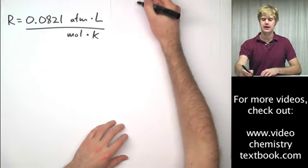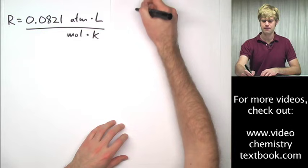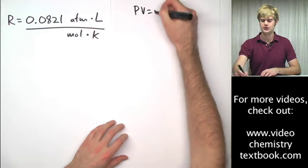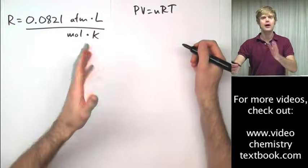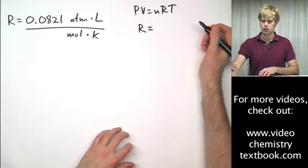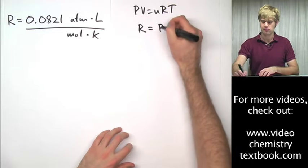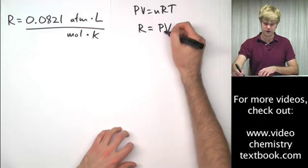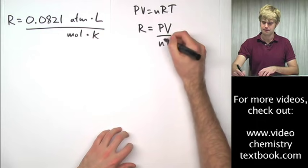I'm going to take the ideal gas law, PV equals nRT, and rearrange it to solve for R. So we're going to get R equals PV divided by nT.